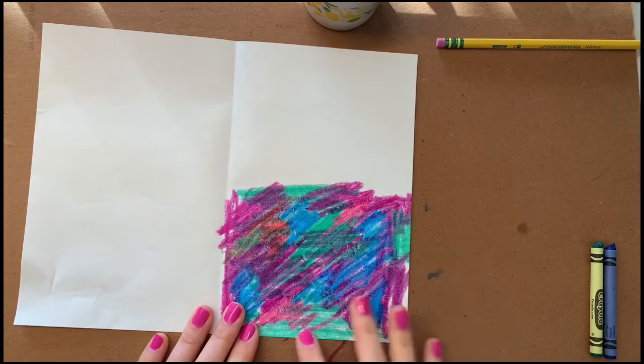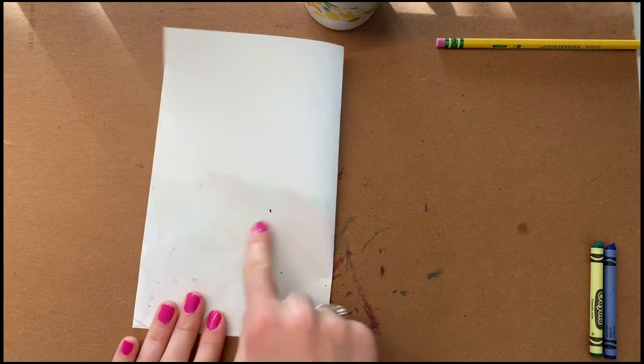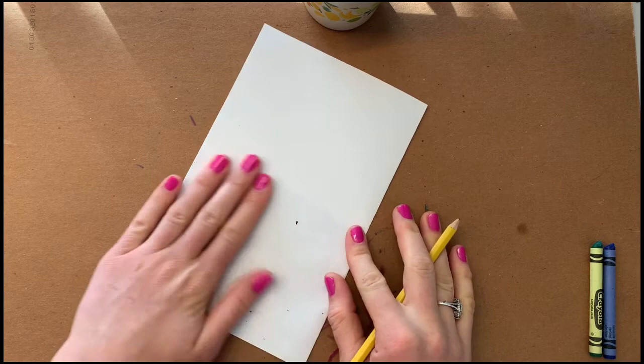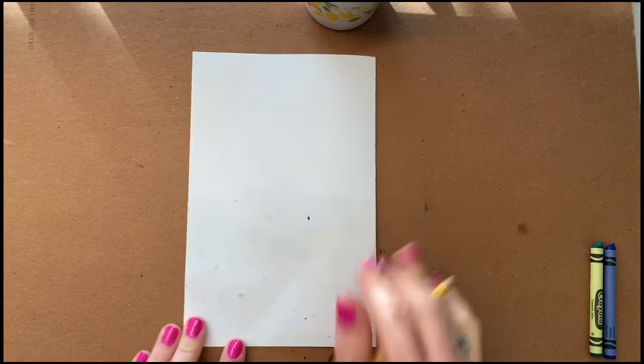So once you have a patch of crayon drawn very darkly, then you'll turn over your folded paper like this and we are going to draw on the back side. Now you can draw whatever you want. The harder you press, the more that your crayon will transfer though.